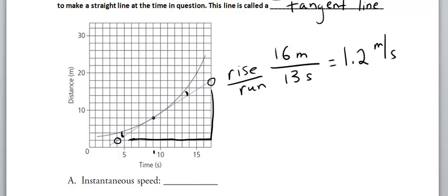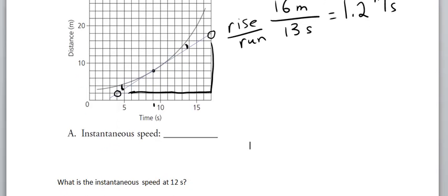And then the next question, just to do one more practice. What is the instantaneous speed at 12 seconds? So we would find 12 seconds right here on our graph. Work our way up to the line. There it is. And I would need to draw another tangent line at that point.